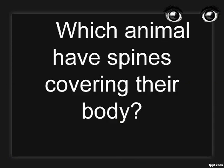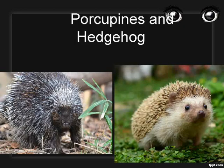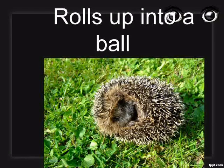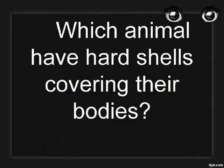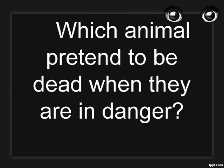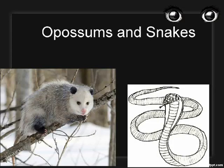Which animals have spines covering their body? Porcupines and hedgehogs. When a hedgehog senses danger, what does it do? It rolls up into a ball. Which animals have hard shells covering their bodies? Tortoises and snails. Which animals pretend to be dead when they are in danger? Opossums and snakes.